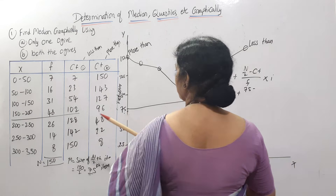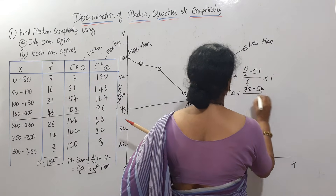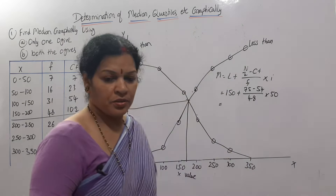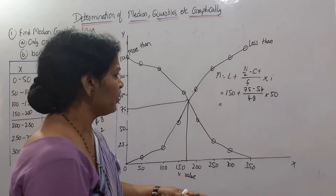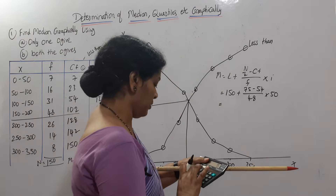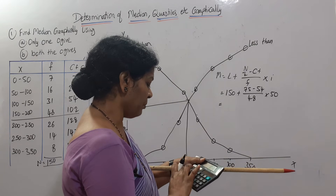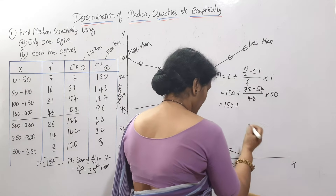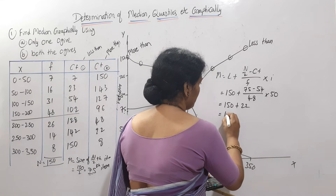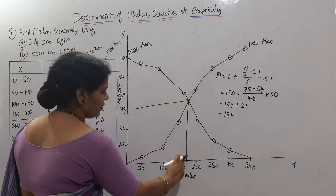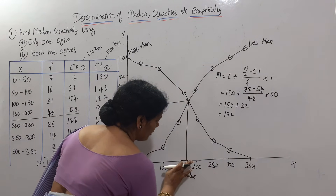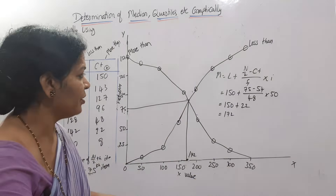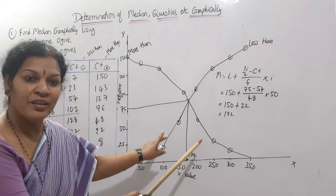Applying the formula: Median = 150 + [(75 − 54) / 48] × 50 = 150 + (21/48) × 50 = 150 + 21.87 ≈ 150 + 22 = 172. This matches the graphical value of 172, confirming that the graphical method and the calculated method give the same answer.